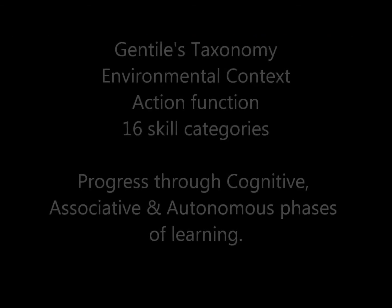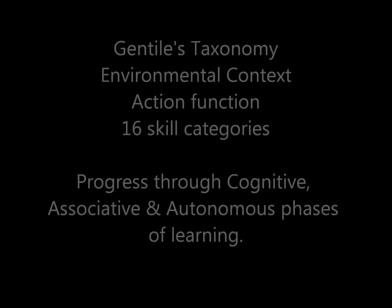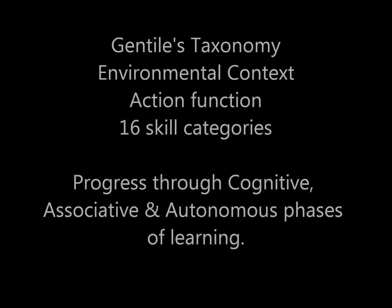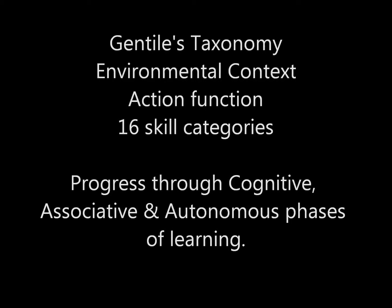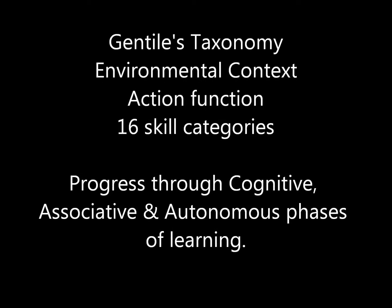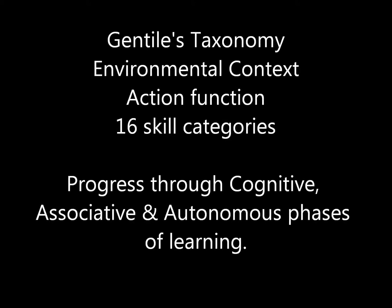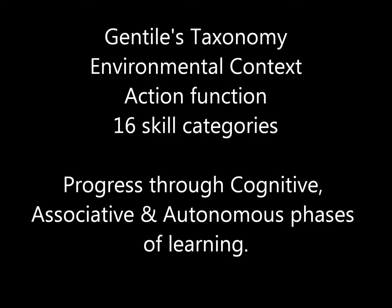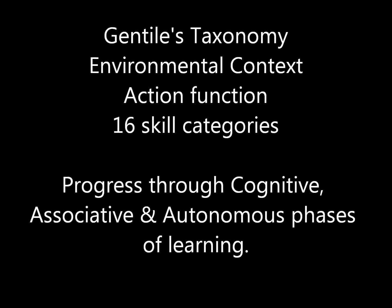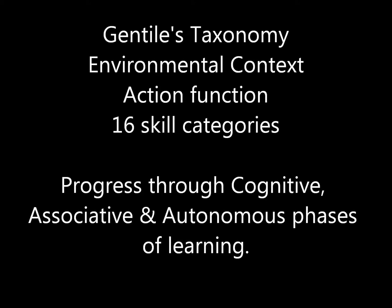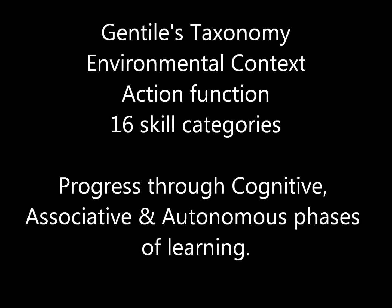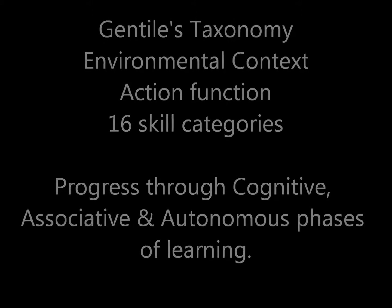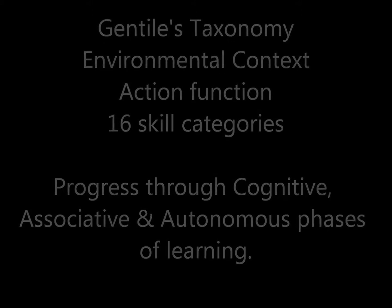Gentile's Taxonomy is a two-dimensional classification system. It takes into account the environmental context, such as regulatory conditions and its trial variability, and the function of the action, such as object manipulation and body transport. This yields 16 skill categories. The taxonomy enables a plan for all stages of learning, from cognitive to associative and autonomous.